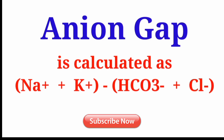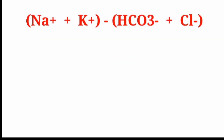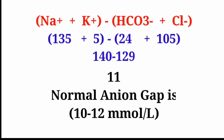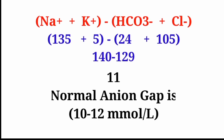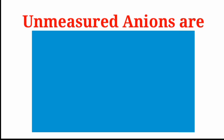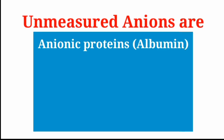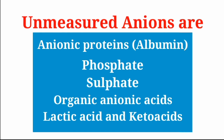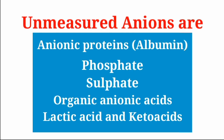Anion gap is calculated as the concentration of sodium and potassium minus the concentration of bicarbonate and chloride. Putting in the normal values of sodium, potassium, bicarbonate, and chloride shows that the normal anion gap is 10 to 12 millimoles per liter. This anion gap represents the unmeasured anions, which include anionic proteins such as albumin, phosphate, sulfate, and organic anionic acids.